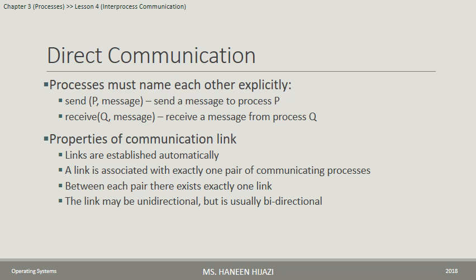Direct communication has two variants: Symmetric — both the sender and receiver must explicitly name each other to communicate. Asymmetric — only the sender must name the recipient; the receiver does not need to name the sender.